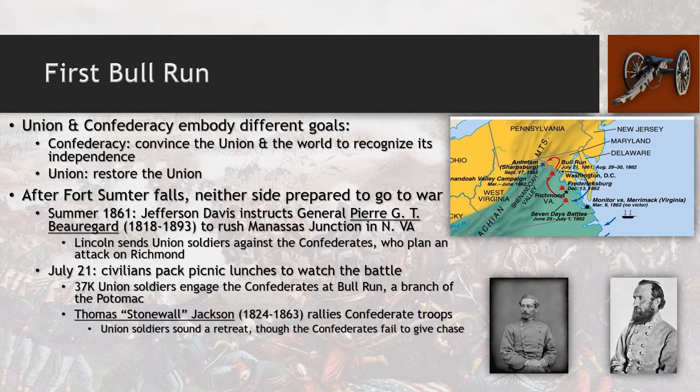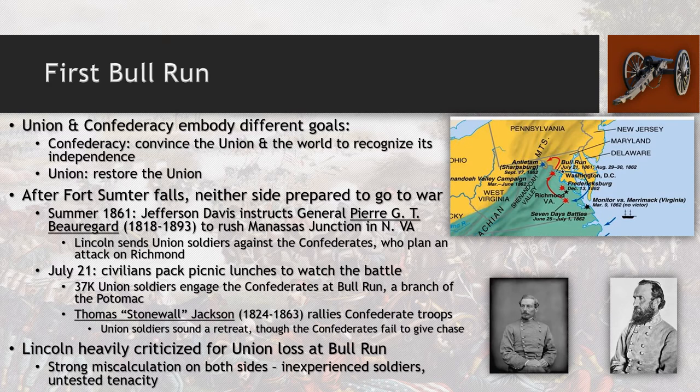The Union soldiers sound retreat. Another frustrating feature of the Civil War is that any time one side sounds a retreat, the other side refuses to give chase — which gets a lot of officers in trouble over time. When Bull Run is lost, Lincoln is immediately criticized for the Union army not being equipped for this, not prepared for the level of tenacity the Confederacy would show. Both sides have a lot of miscalculation — the soldiers are very inexperienced and didn't expect war to be so bloody, deadly, or chaotic.